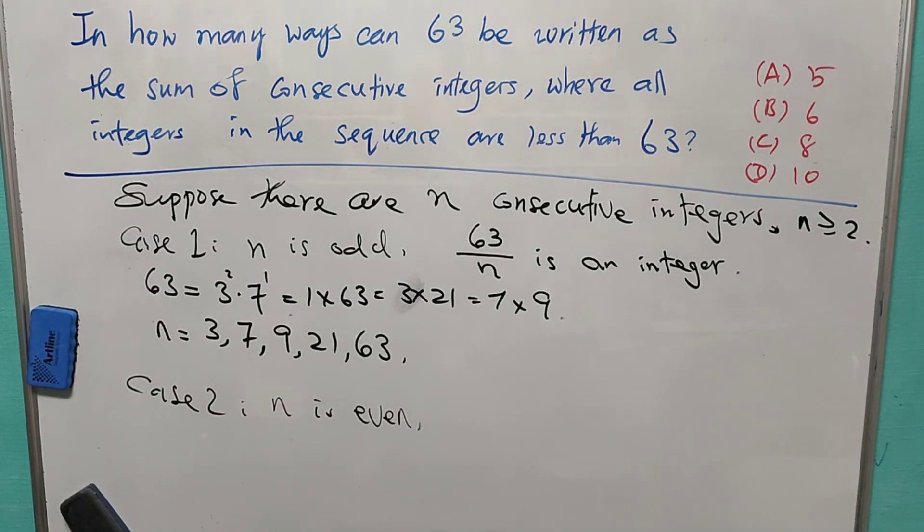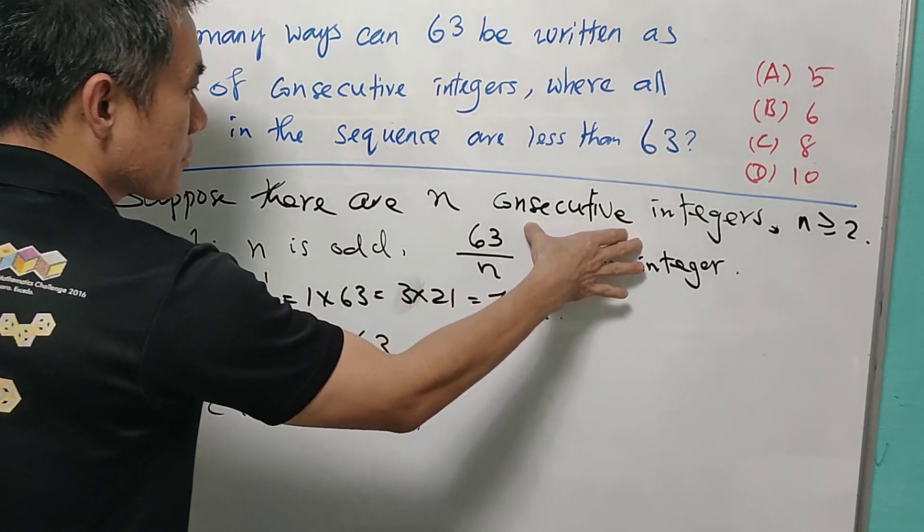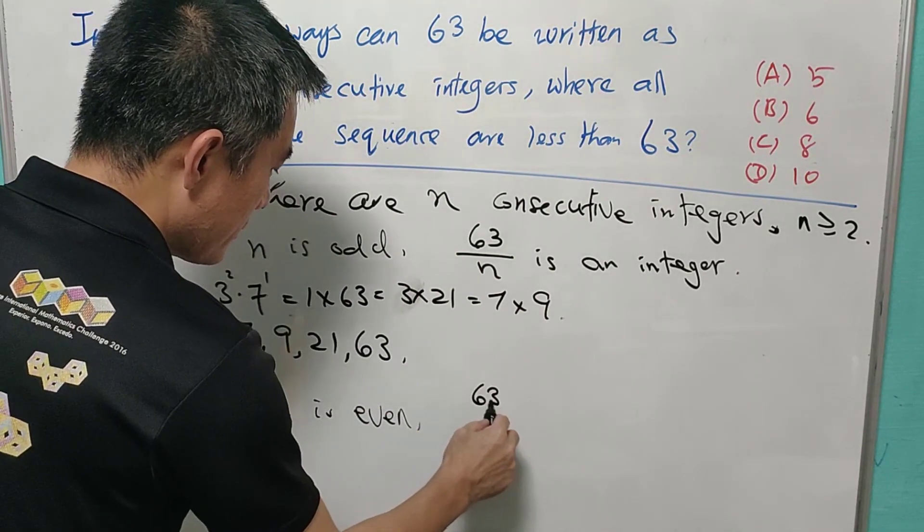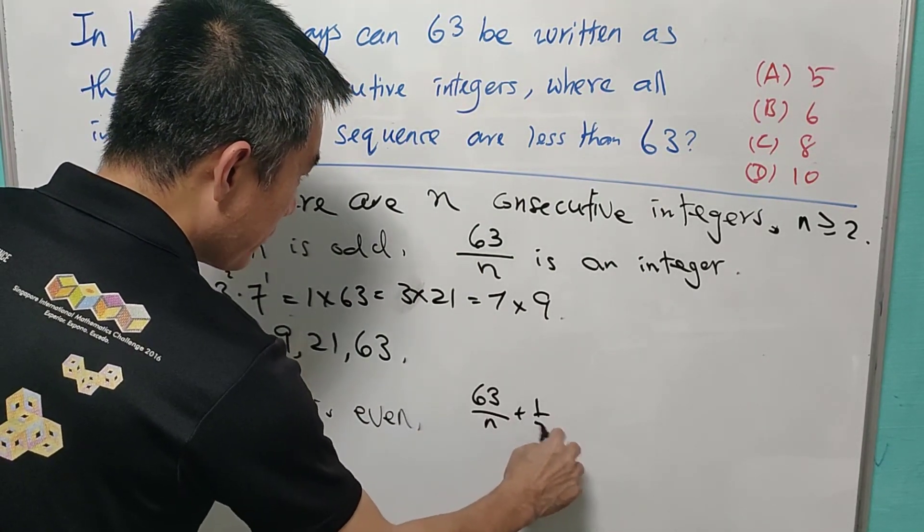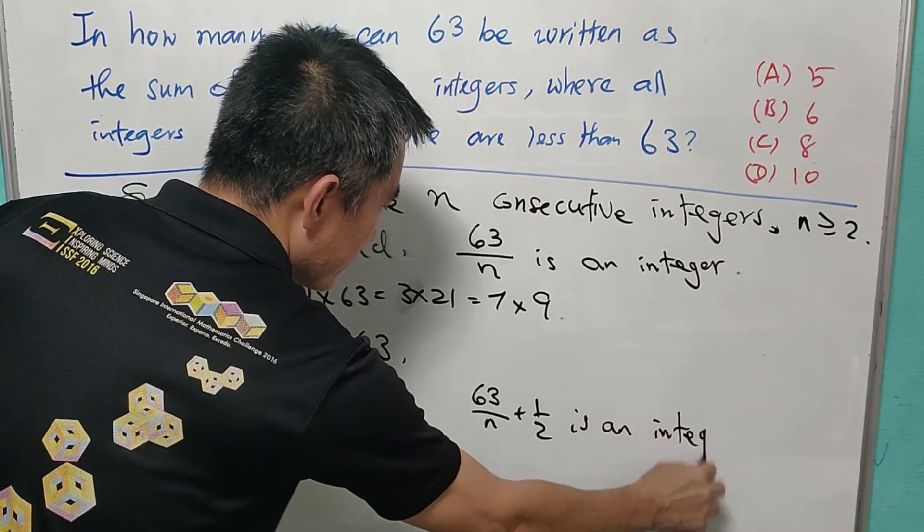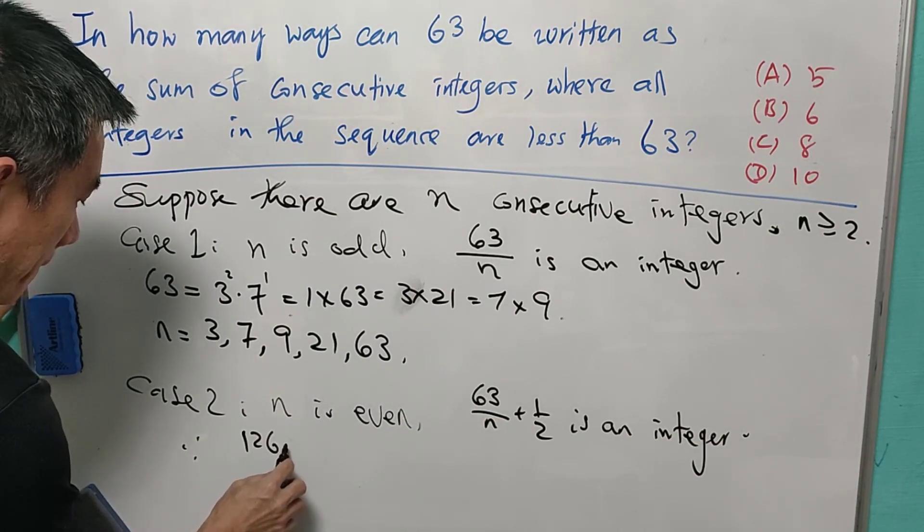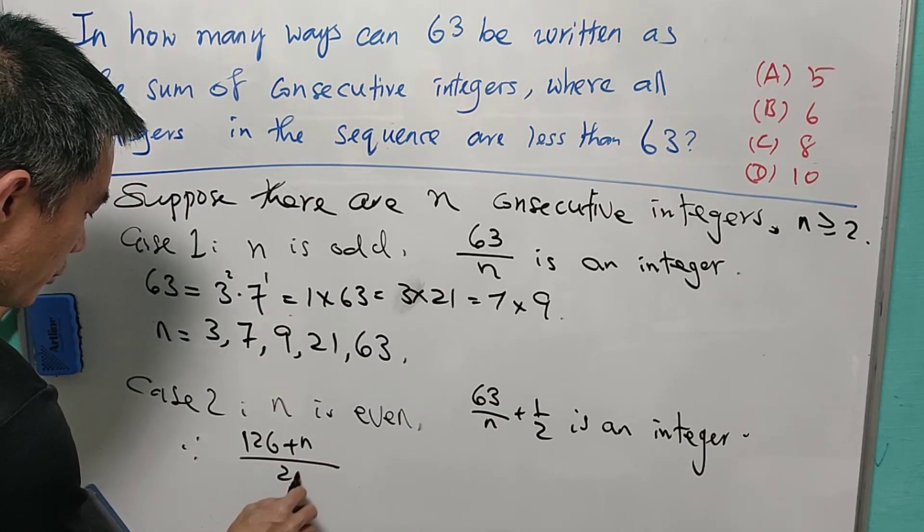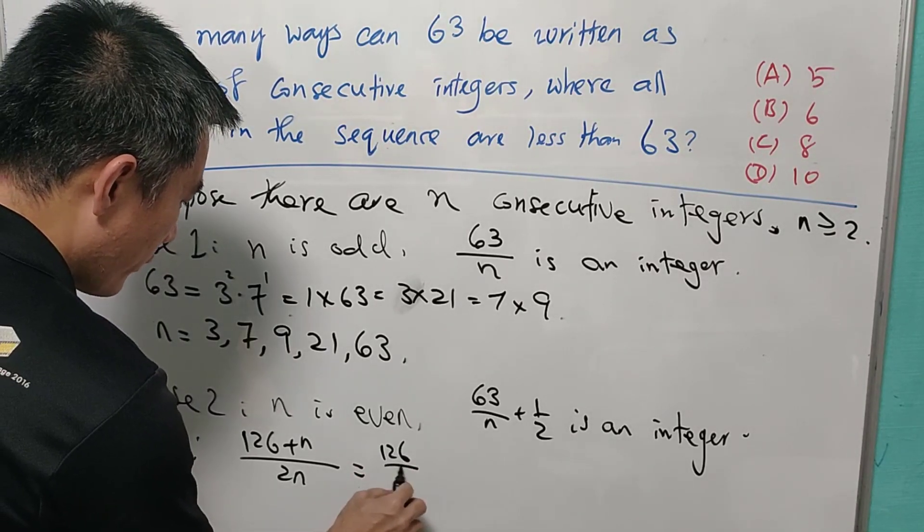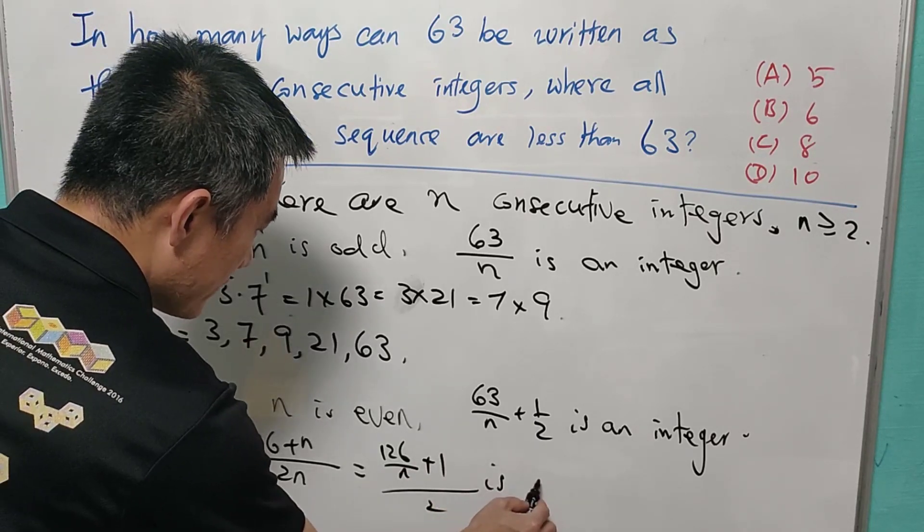And for case 2, n is an even number with the sum of n consecutive integer equals to 63. It means that 63 over n plus half is an integer. And therefore 126 plus n over 2n is an integer. It means that 126 over n plus 1 over 2 is an integer.